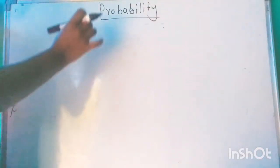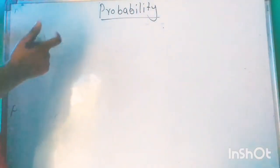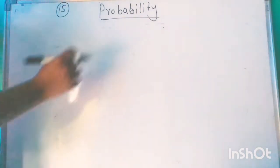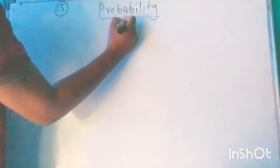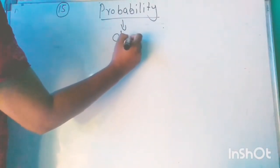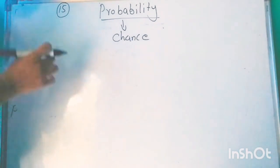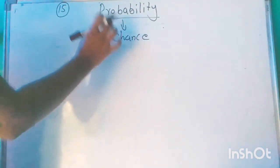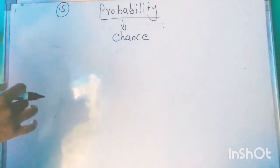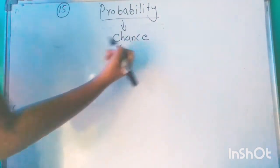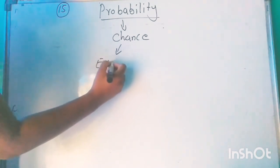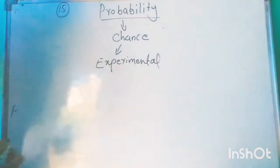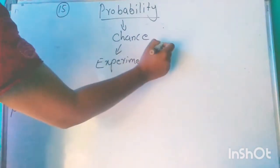Hi children, today we are going to discuss probability — the 15th chapter of class 10. Probability means the chance of occurring something. Mathematically, we can express the chance of occurring something. Probability is divided into two types: one is experimental probability, and the second one is theoretical probability.